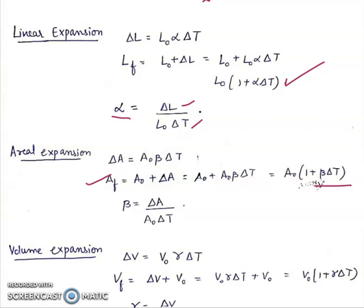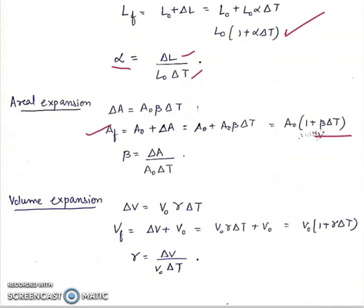Volume expansion: delta V is equal to V0 gamma delta T. Gamma is the coefficient of volume expansion. Gamma is equal to delta V upon V0 delta T. V final will be delta V plus V0.